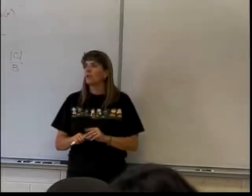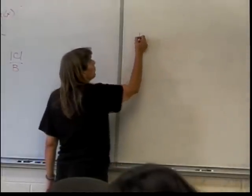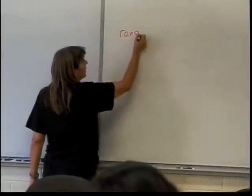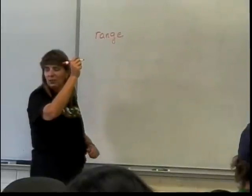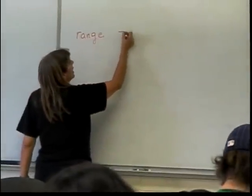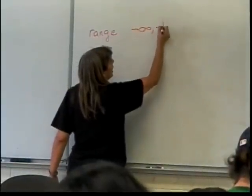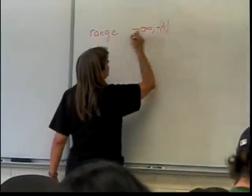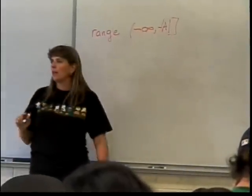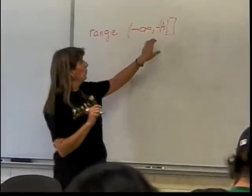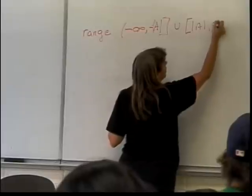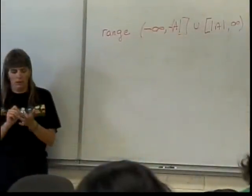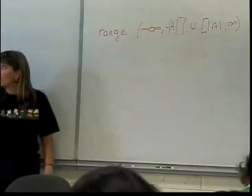So what does that change? It'll change my range. So for this, the range will change. The range will change to negative infinity to negative absolute value of A. The reason for that is A could be negative, and we want this to be a negative number. Union absolute value of A comma infinity. So that will mess with my range.